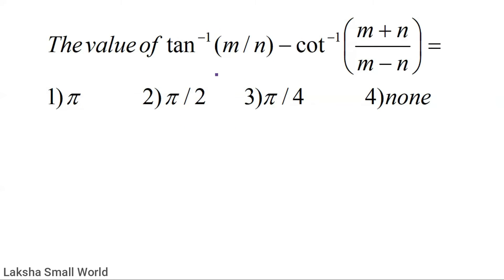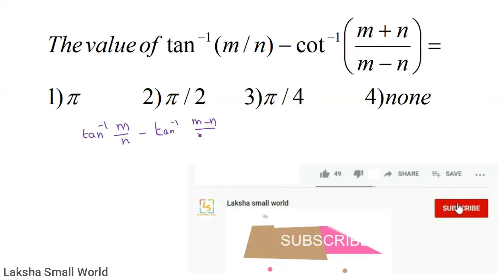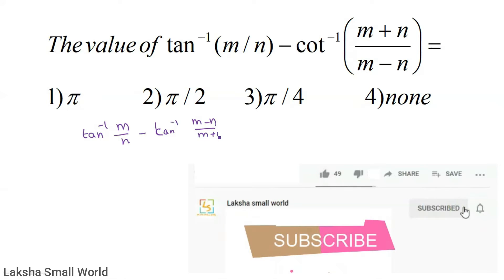Next problem: find the value of tan⁻¹(m/n) minus cot⁻¹((m+n)/(m−n)). First, convert cot⁻¹ to tan⁻¹: cot⁻¹((m+n)/(m−n)) equals tan⁻¹((m−n)/(m+n)).